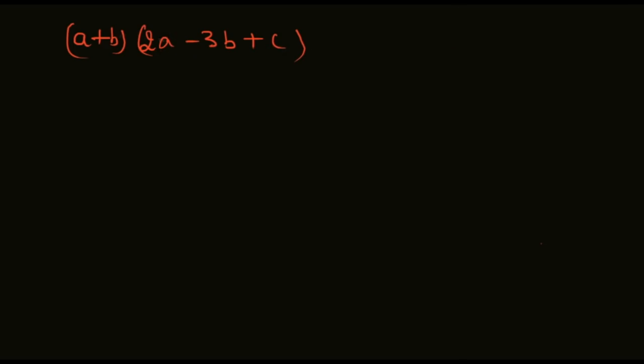Trinomial term and two terms binomial term. We are going to do the same process. First of all, a and plus b, we are going to write the second bracket: 2a minus 3b plus c, either b 2a minus 3b plus c.